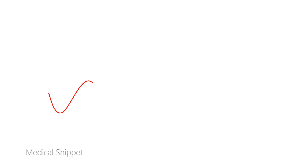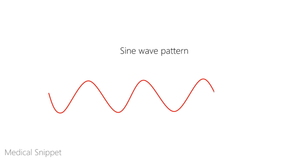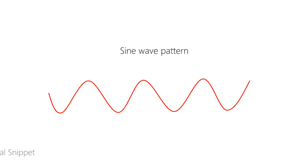When hypokalemia is very severe, the widened QRS complexes merge with their corresponding T-waves, and the ECG looks like a sine wave pattern. If potassium further raises, the heart arrests in asystole.